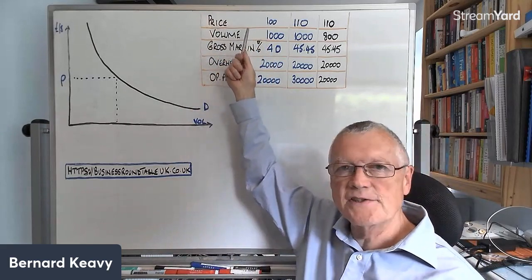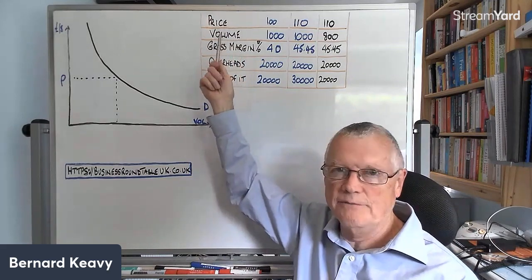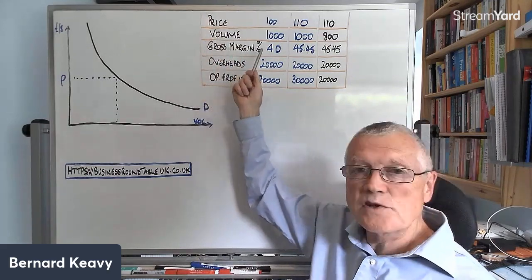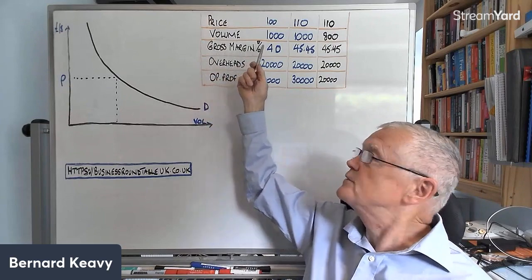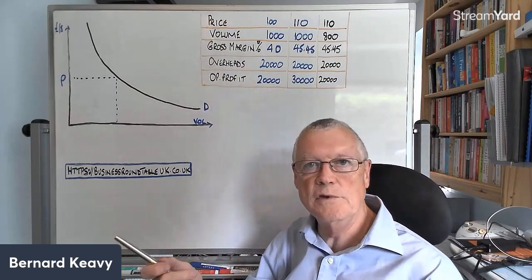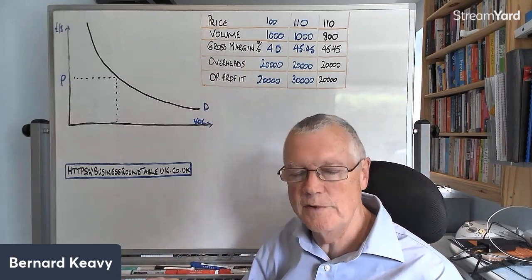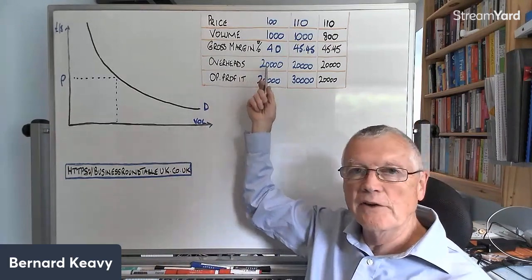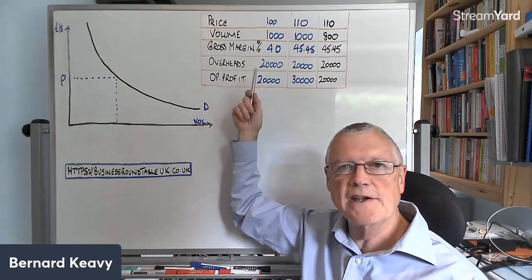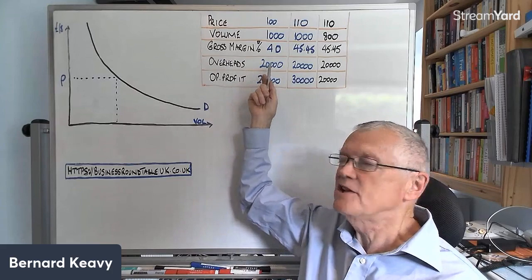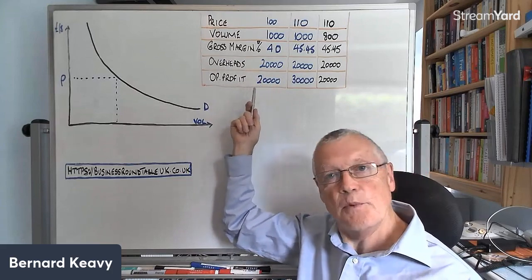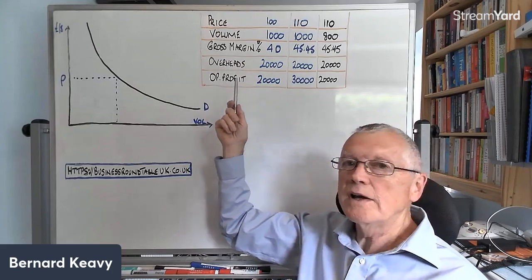So here the price is 100, the volume is 1,000, your revenue would be 100,000. Your gross margin is how much you make on everything you sell—it's 40%—so therefore your gross profit would be 40,000. You know your overheads which are fixed and don't change as you sell more or less, they're 20,000. That would tell you that your profit's 20,000.